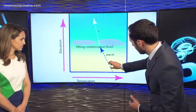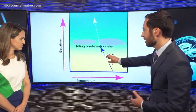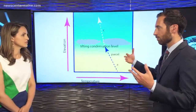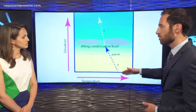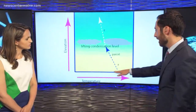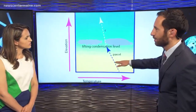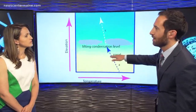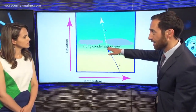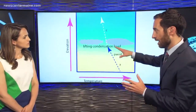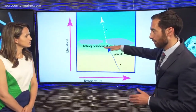As it cools, it gets easier and easier to get to 100% humidity. The reason for that is you're getting closer and closer to the dew point. Say the dew point's 70 and that air parcel's 85 — well, now it's 83, now it's 80, now it's 75. And when it gets to 70, it's 100% saturated, and that's where it can start to form a cloud.